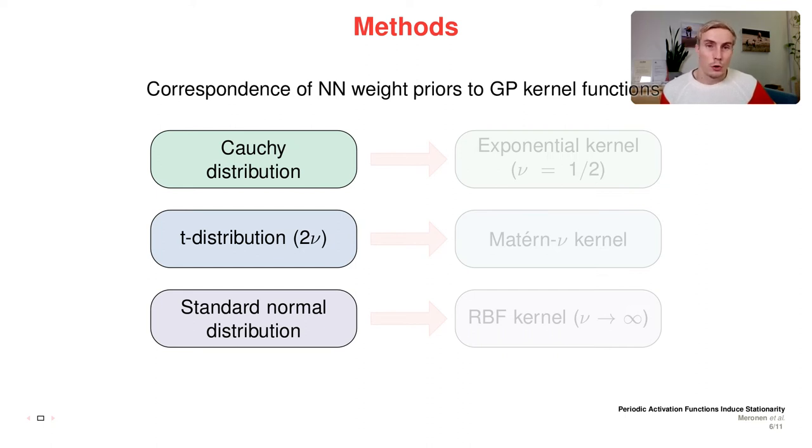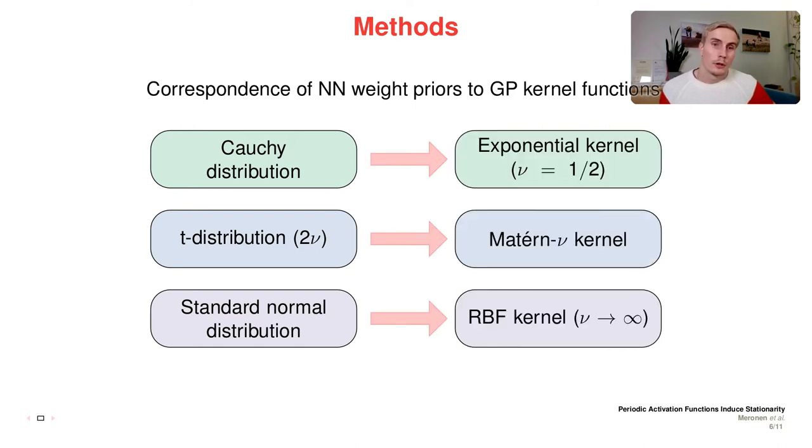Different priors on the weights lead to different kernels. For example, using a Cauchy prior distribution on the weights corresponds to an exponential kernel. A student-t distribution corresponds to the Matérn family of kernels. A standard normal distribution corresponds to an RBF kernel, and so on.